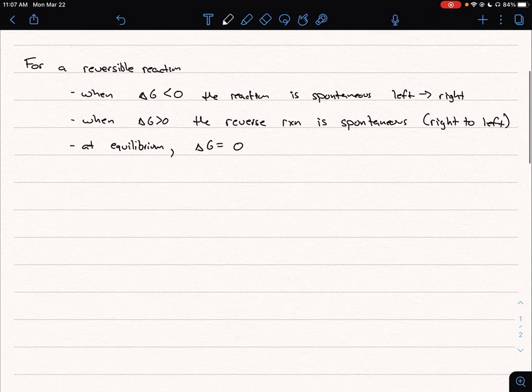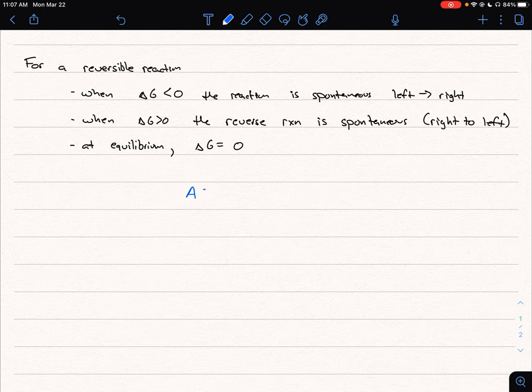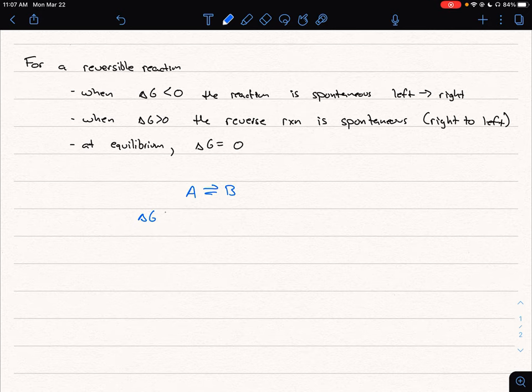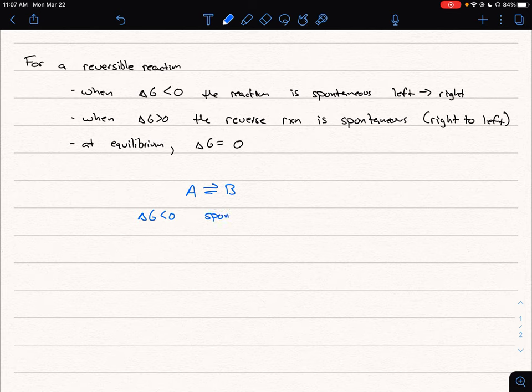So we can sort of summarize that. And if we think about this for some generic reaction that's reversible, A goes to B. We could write if delta G is negative, then the reaction is spontaneous in the forward direction.